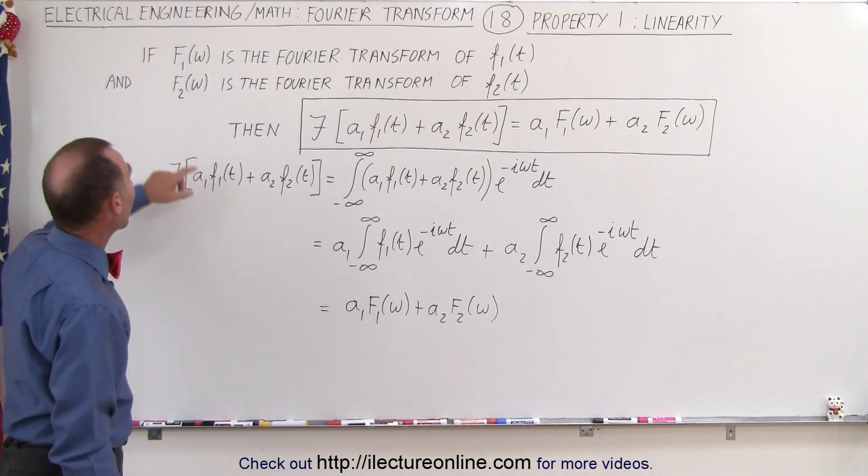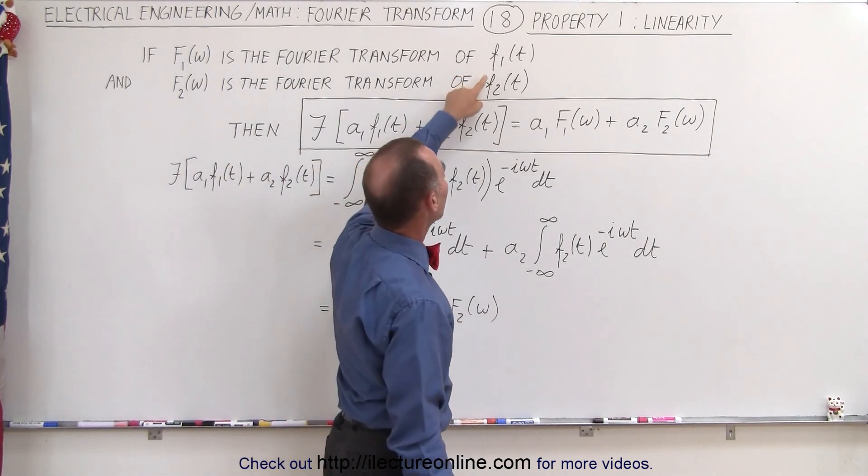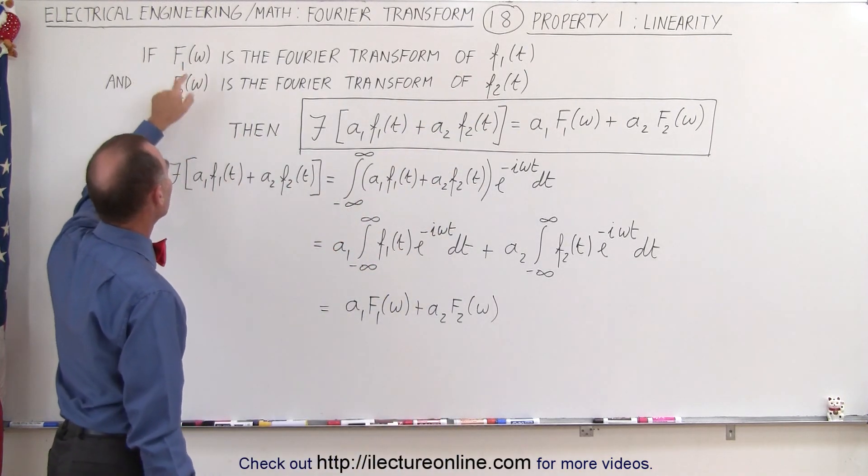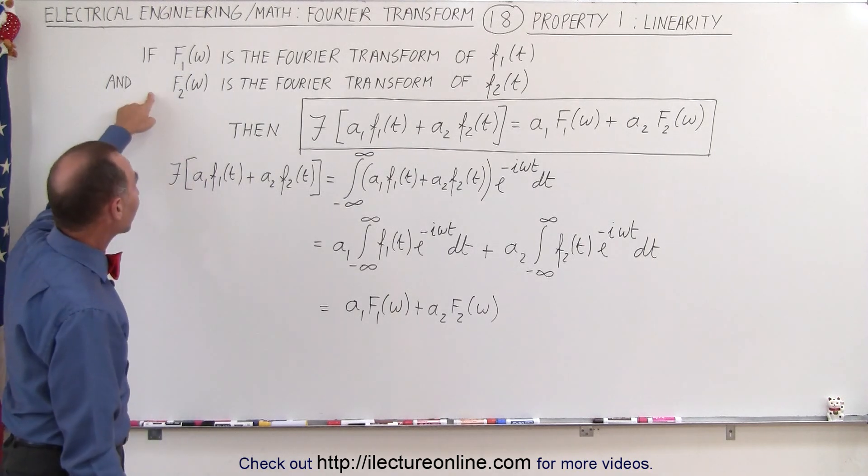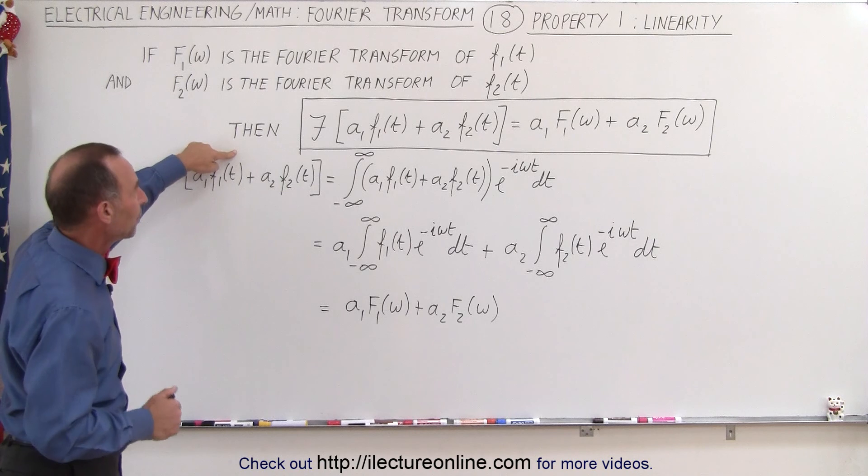So let's say that we have two input functions, f1 of t and f2 of t, and these are then the Fourier transforms in the frequency domain. Well, if that's the case, then we can say, and this is what we call the linearity property,